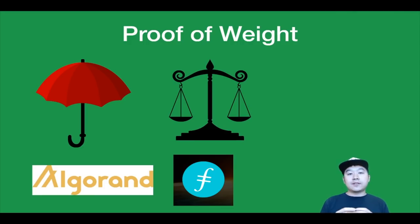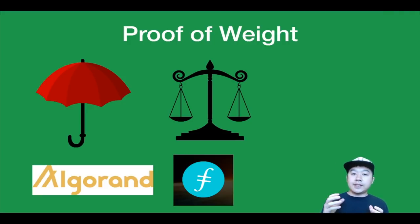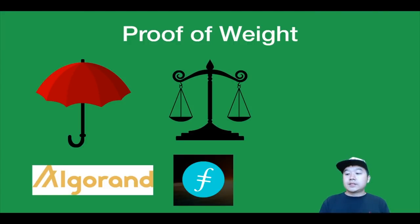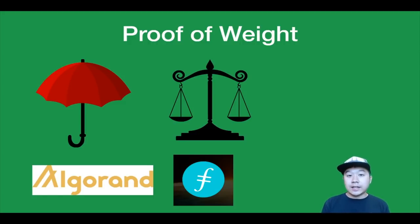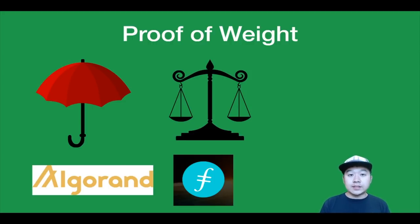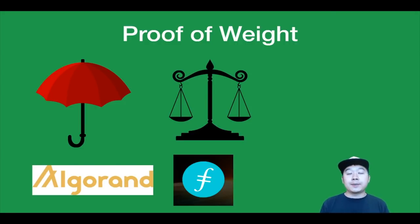Proof of weight is kind of an umbrella or broader family of consensus protocols where instead of the amount of stake as in proof of stake, you weight some other measure. Some versions of this include proof of space or proof of reputation — two we just went through. Projects that utilize this approach include Algorand, Filecoin, and Chia. For example, with Filecoin, instead of weighting the amount of coins you lock up, they weight the amount of IPFS data you have stored to determine how likely you are to add the next block or verify blocks.